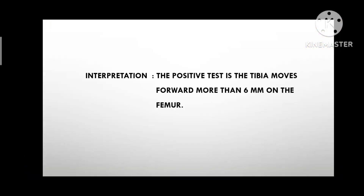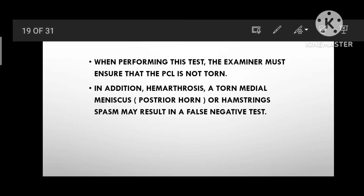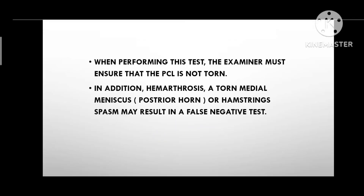Interpretation: the test is positive if the tibia moves forward more than 6mm on the femur. When performing this test, the examiner must ensure that the PCL is not torn. In addition, hemarthrosis, a torn medial meniscus, or hamstring spasm may result in a false negative test.